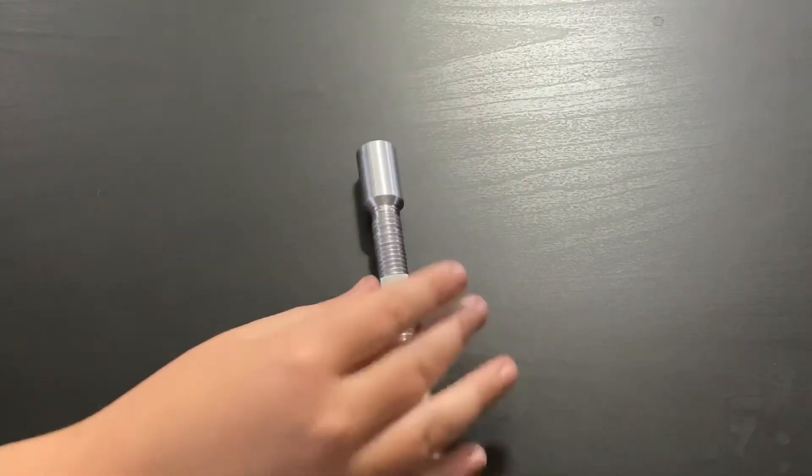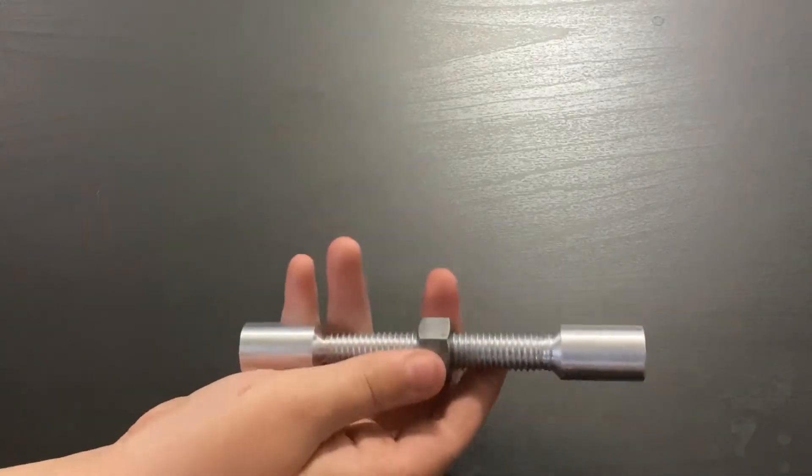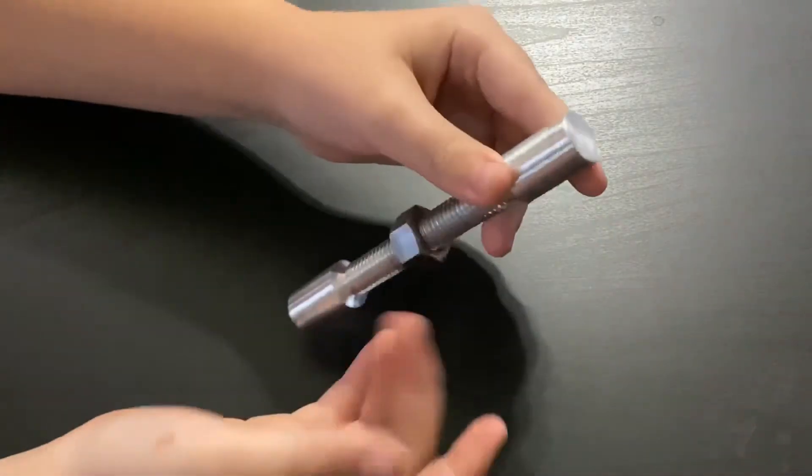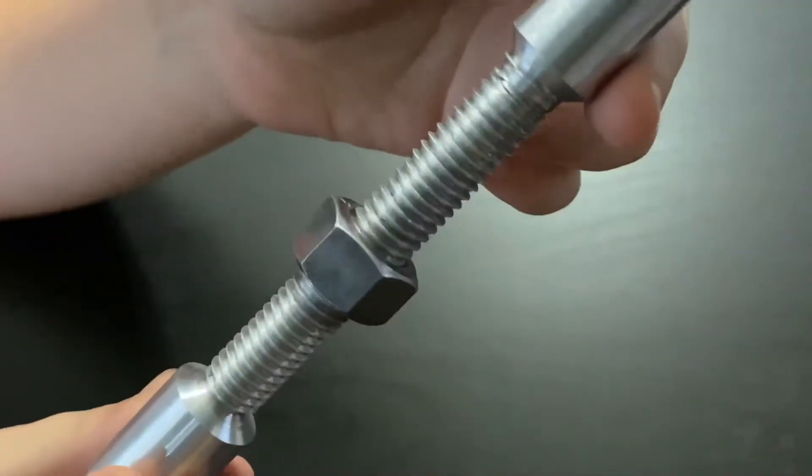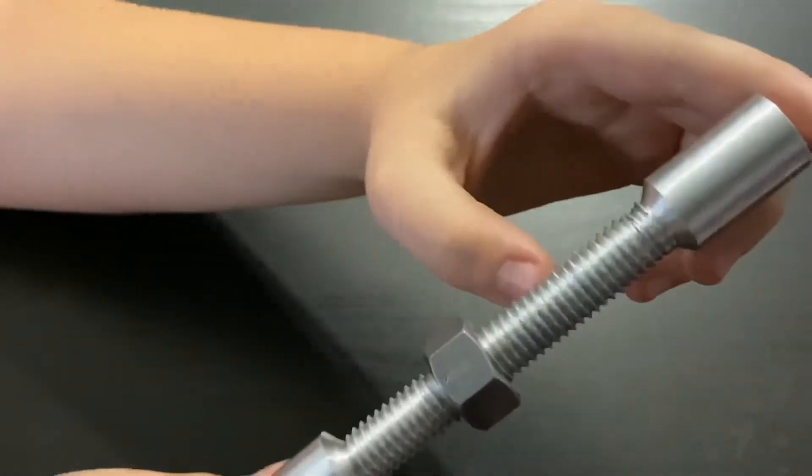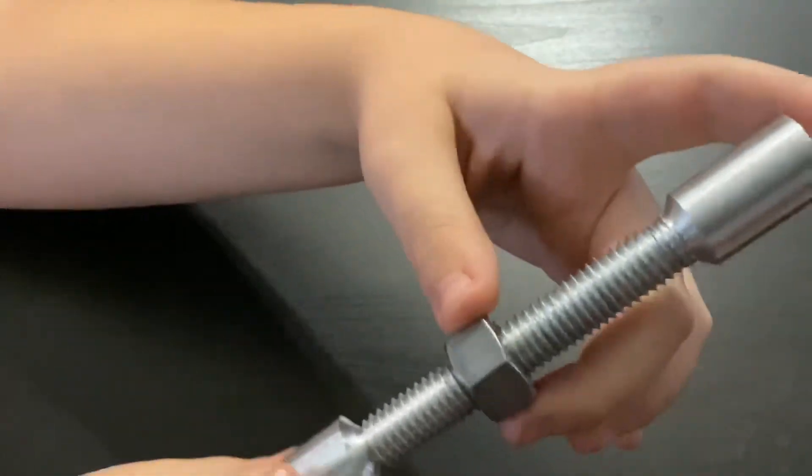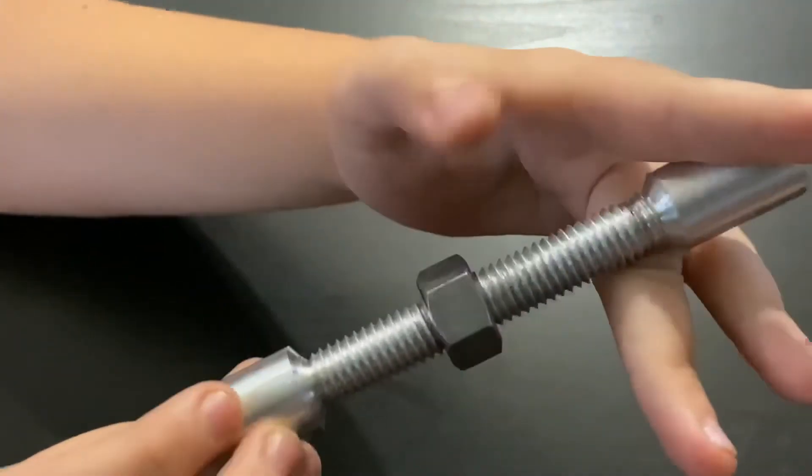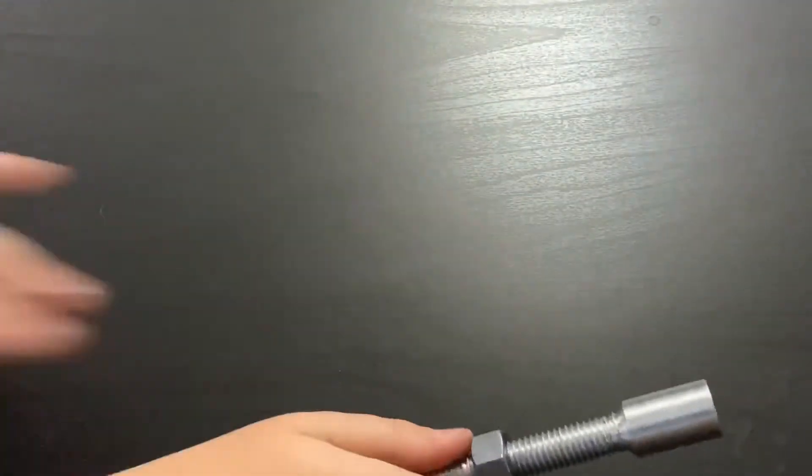And we got one half inch by 13 threads per inch. If you look at that closely enough, you'll see it's 13 threads per inch. One half inch by 13 threads. So it fits with this. That's why this moves around on here.